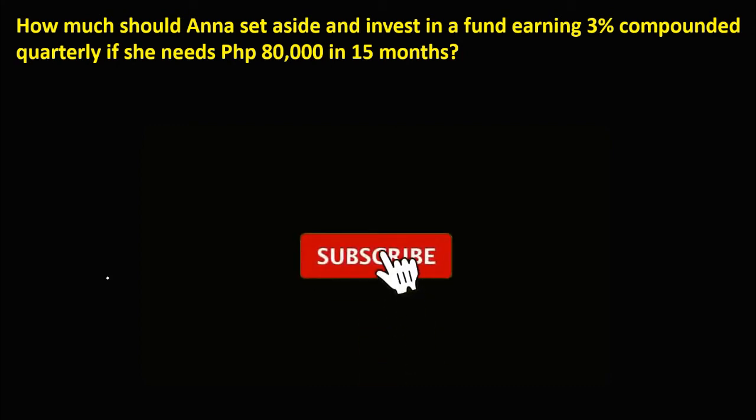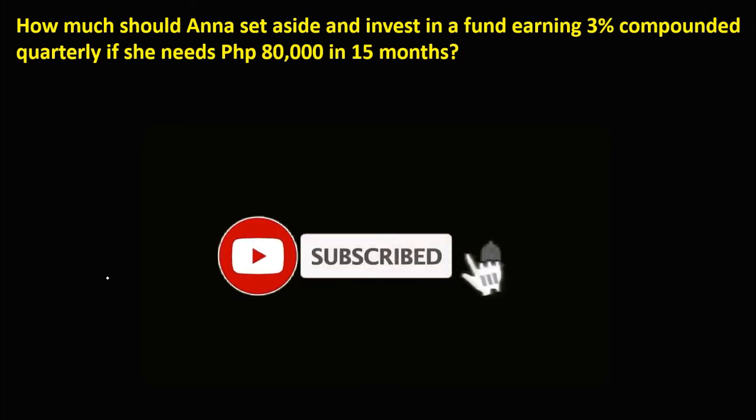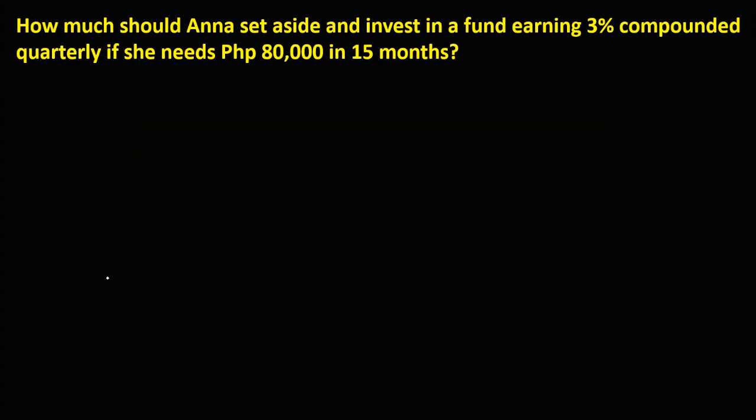So let's have this problem. How much should Anna set aside and invest in a fund earning 3% compounded quarterly if she needs 80,000 pesos in 15 months?